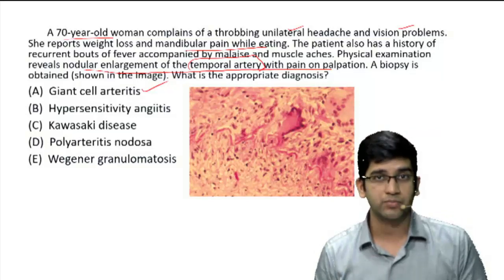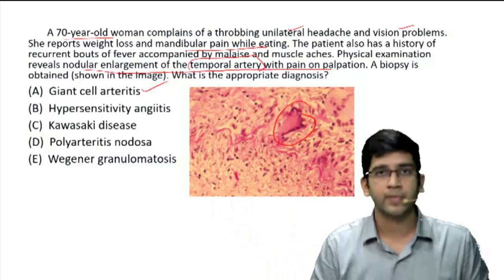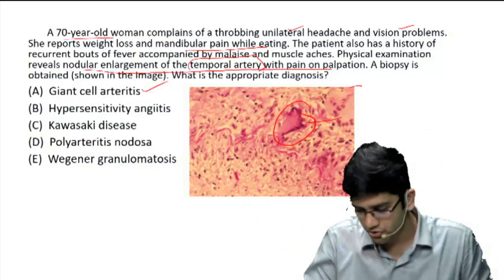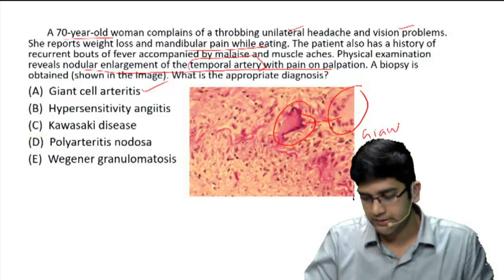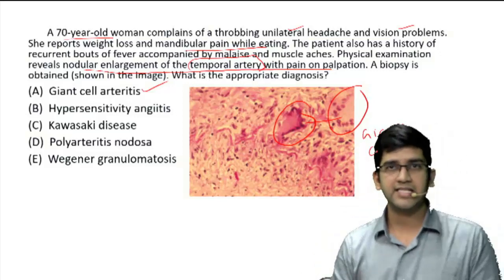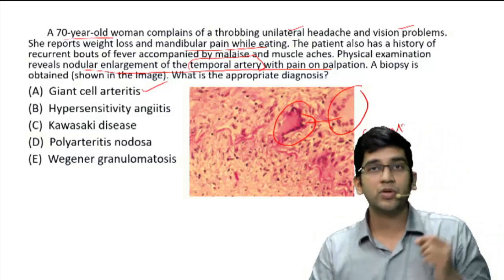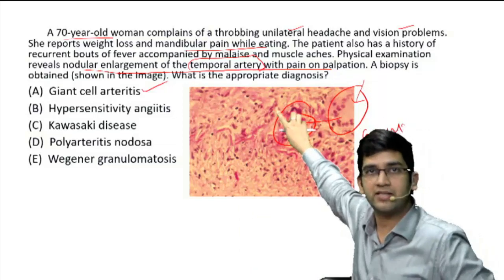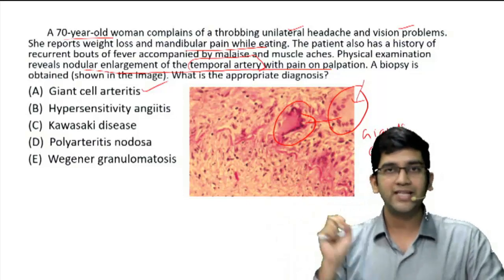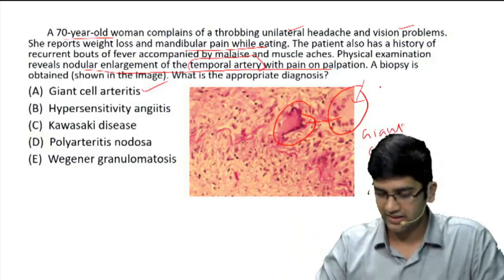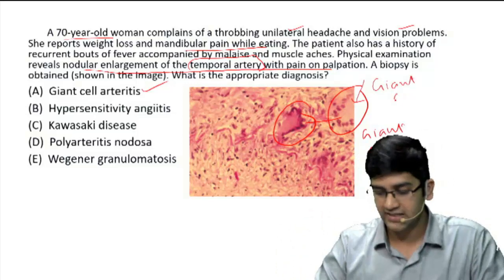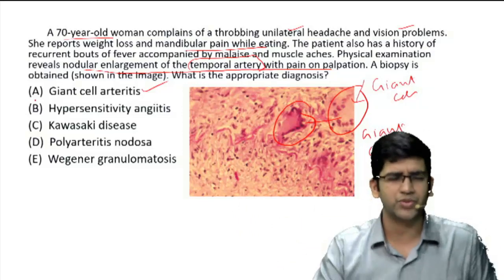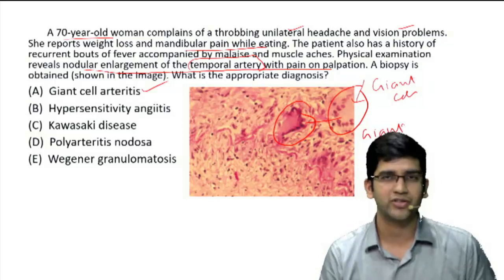If you want to understand something in the picture, here is the clue. If you look at this, I have circled a cell — that cell is a giant cell. Here also I am having a giant cell. A giant cell is any cell with multiple nuclei, and the nuclear color is blue. When you look at this cell, you can see multiple tiny blue dots — all are nuclei. So when I have multiple nuclei, that's a giant cell. Giant cells will be seen in giant cell arteritis and temporal arteritis. Straightforward — we are going to solve the question very simply.